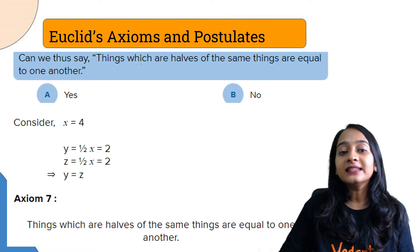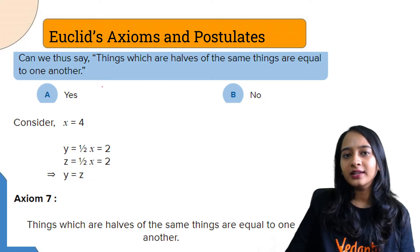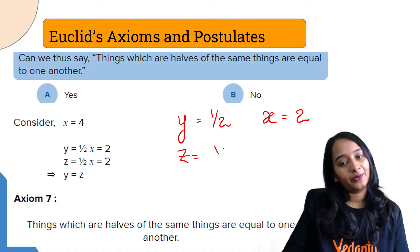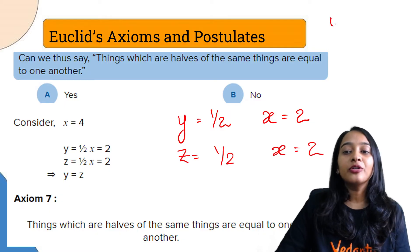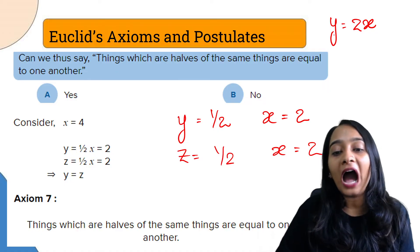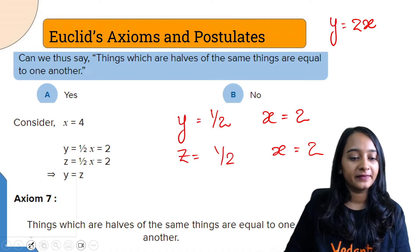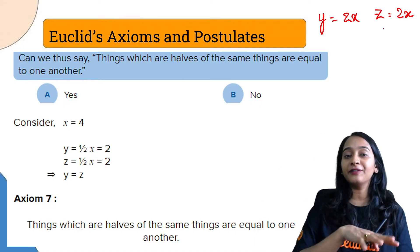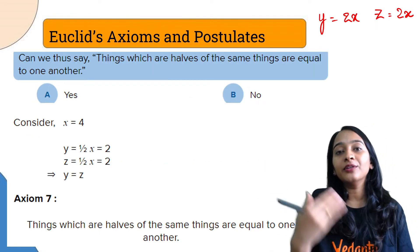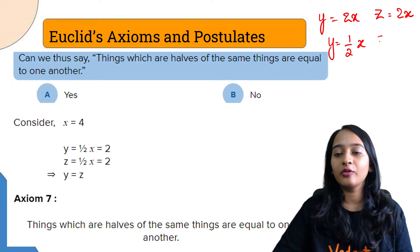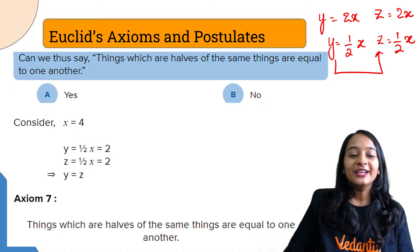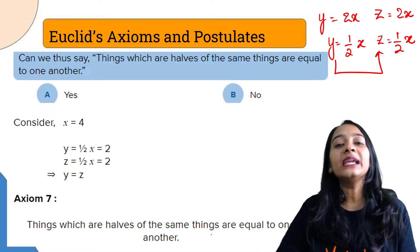Seventh axiom: can we say things which are half of the same thing are equal to one another? Of course. Now X is equal to 4, so Y is equal to one-half of X which is 2, and Z is also equal to one-half of X which is 2. Things which are equal to half of the same thing are equal to each other, just like things which are double of the same thing are equal to each other.